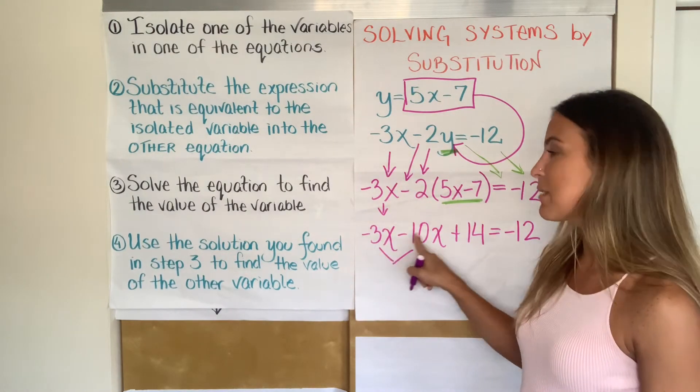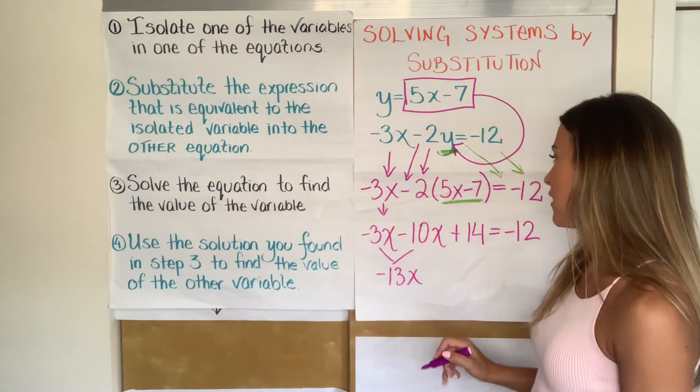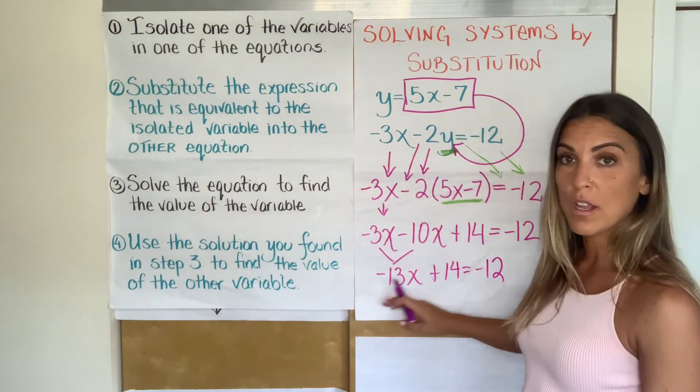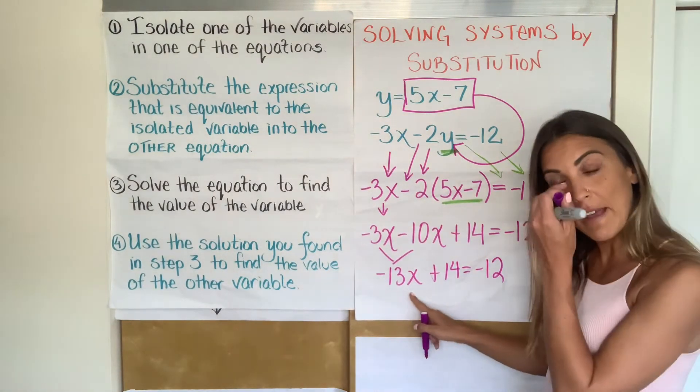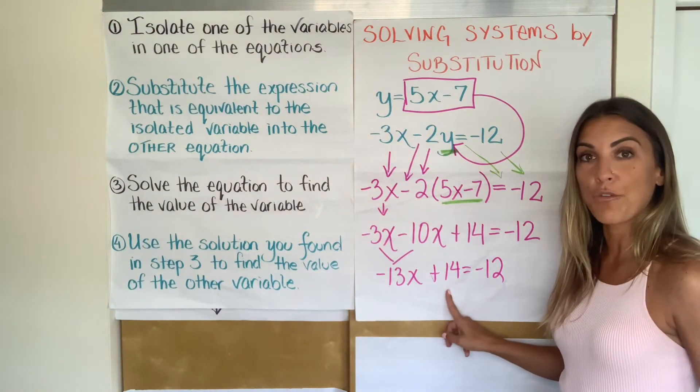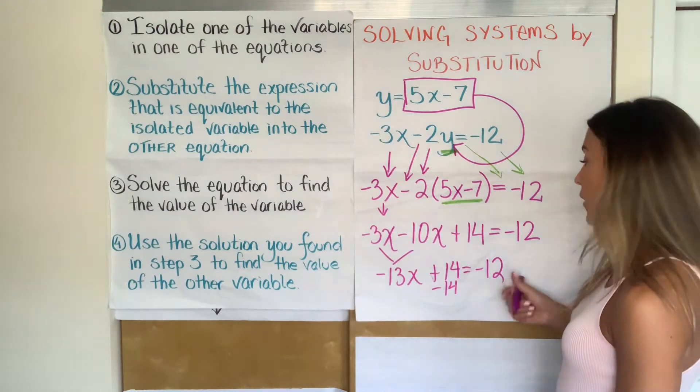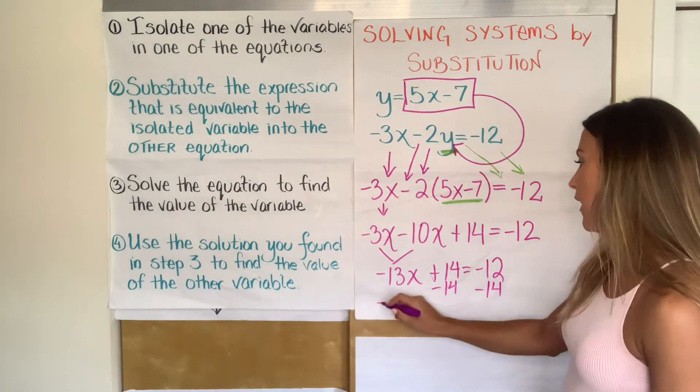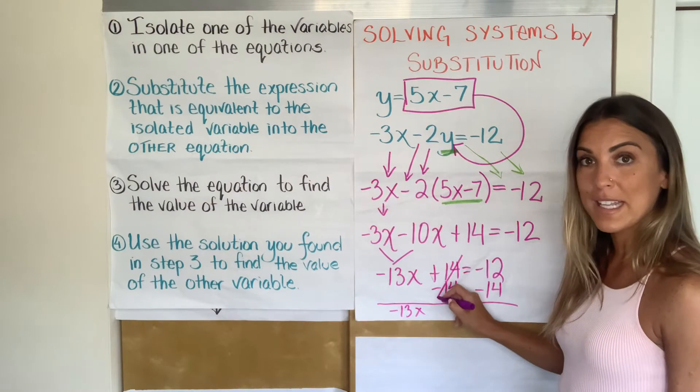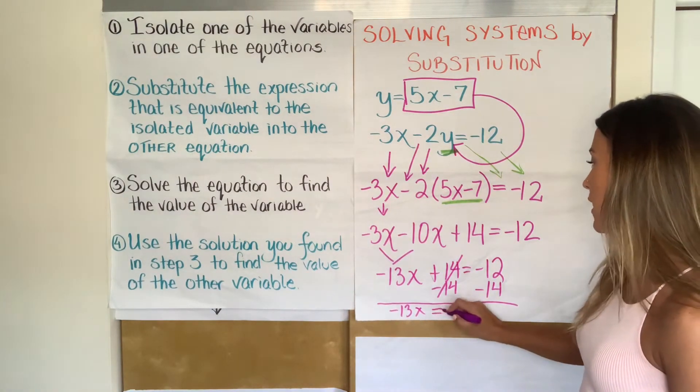On the left side, I'm looking for some like terms and I see them in negative 3X and negative 10X. So negative 3X minus 10X, when I combine like terms, I'm going to get negative 13X. Bring down my plus 14, bring down my equals negative 12. Now I have a two-step equation. So I'm trying to get X by itself. I like to get rid of addition or subtraction first. So we're going to do the inverse operation of 14, which is minus 14. And whatever you do to one side, you do to the other side. That leaves me now with negative 13X.